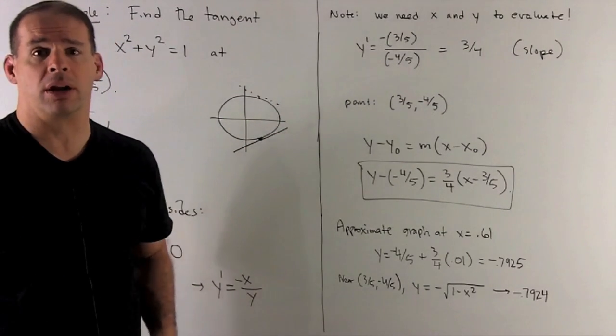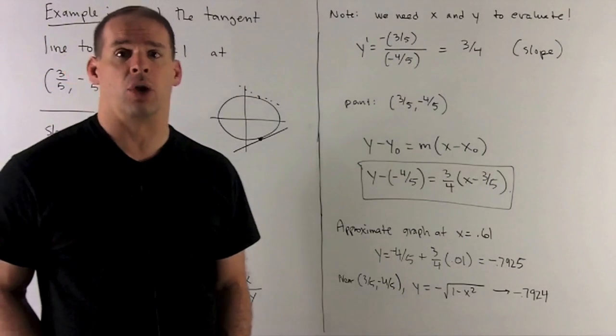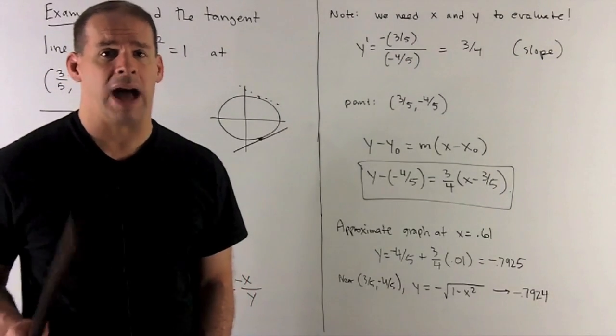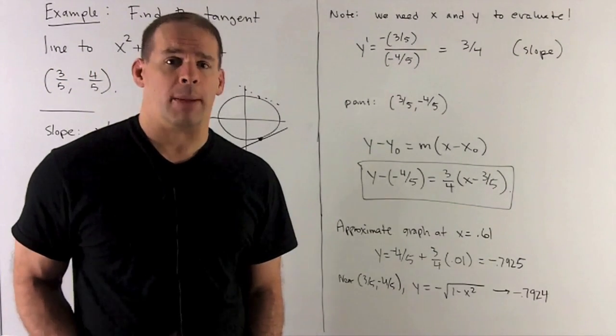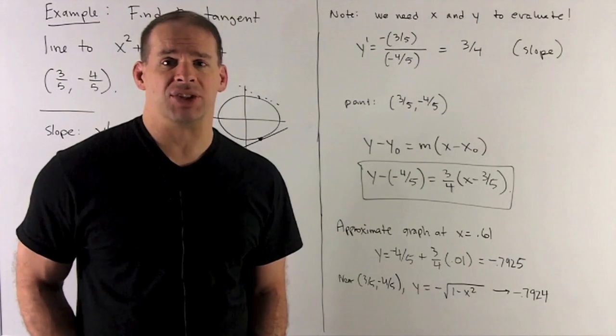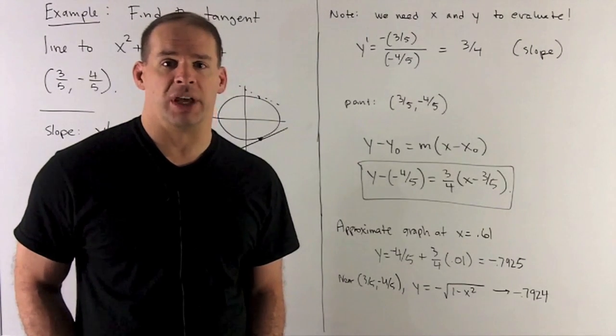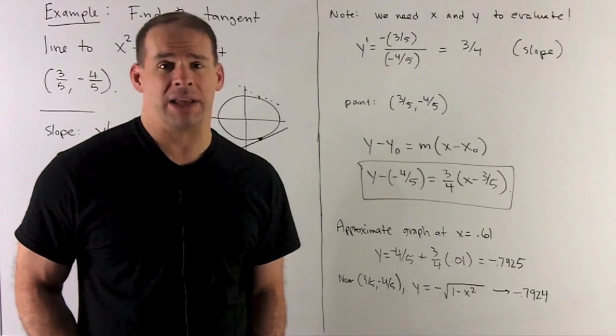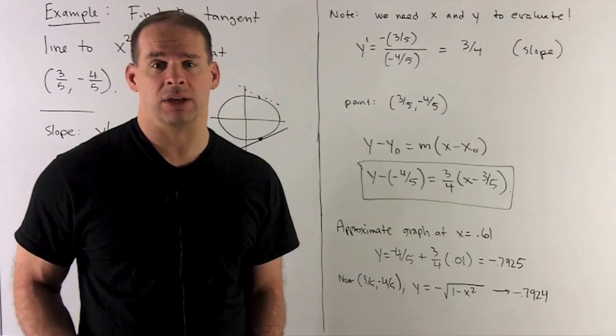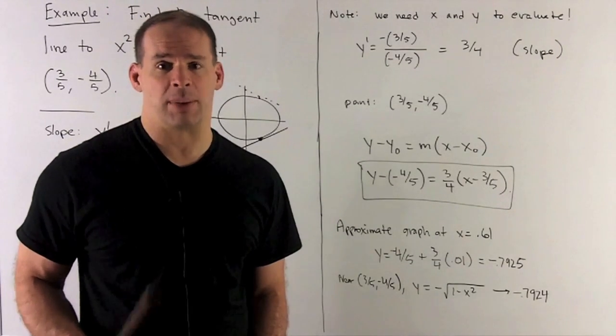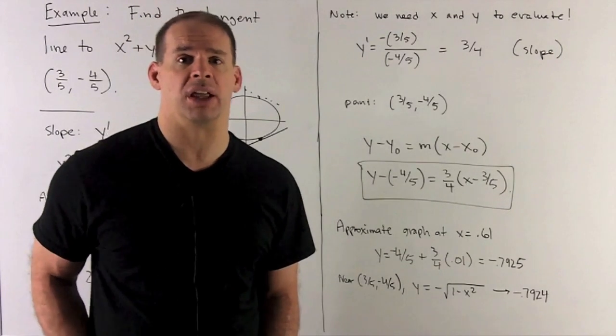Now equation of a line: y - y₀ = m(x - x₀). So now I can just put the numbers in and we'll have y - (-4/5) = (3/4)(x - 3/5) for our tangent line.